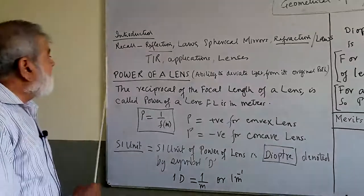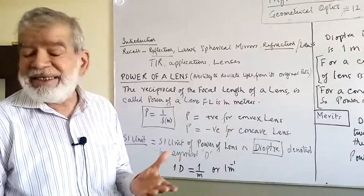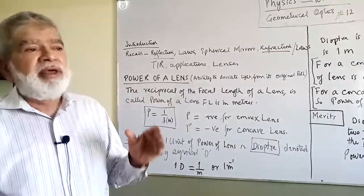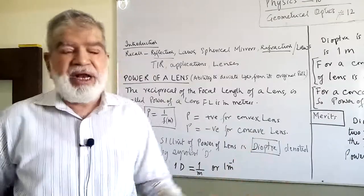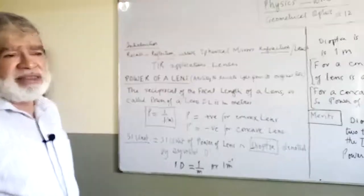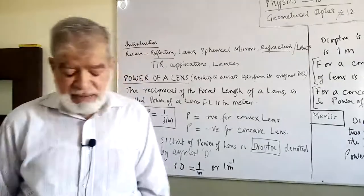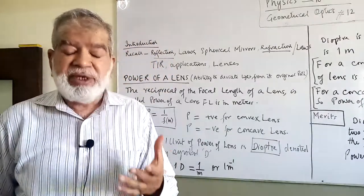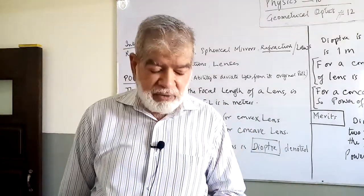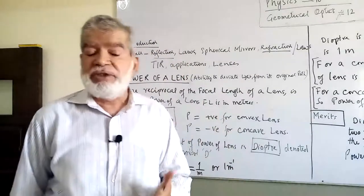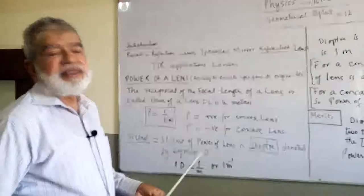Now, the topic for today is power of a lens. How do you find the power? How strong a certain lens is? Or how can you differentiate from different kinds of lenses whether they will be able to focus something better or not? Actually, power of a lens is simply the ability to deviate light from its original path. That is known as the power of a lens.